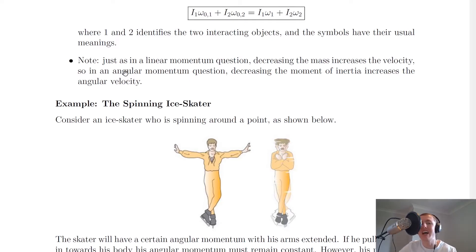So it's the same for angular motion. In an angular momentum question, decreasing the moment of inertia increases the angular velocity. Just in the same way, remember moment of inertia is like the angular form of mass, and angular velocity is obviously the angular form of linear velocity. So if moment of inertia decreases in a certain situation, and we want to keep angular momentum the same, then we must increase angular velocity.